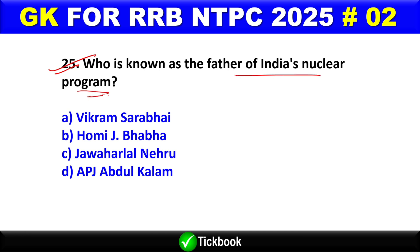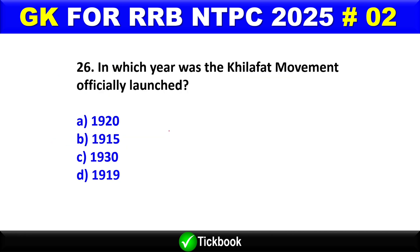Question number 25: Who is known as the father of India's nuclear program? Option B is the right answer — Homi J. Bhabha. Question number 26: In which year was the Khilafat Movement officially launched? Option D is the right answer — 1919.